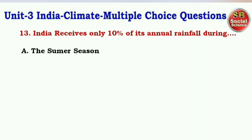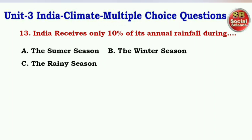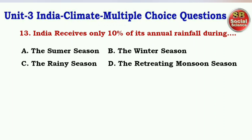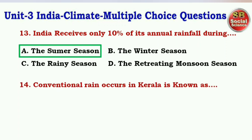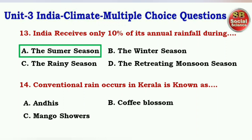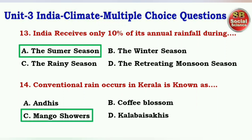Next question: India receives only 10% of its annual rainfall during — options are the summer season, the winter season, the rainy season, the retreating monsoon season. The right answer is option A — the summer season. Next question: Conventional rain that occurs in Kerala is known as — options are Andhi, Coffee Blossom, Mango Showers, Kala Baisakhi. The right answer is option C — Mango Showers.